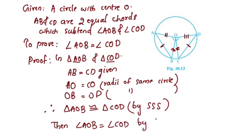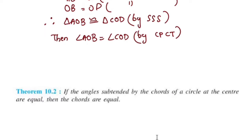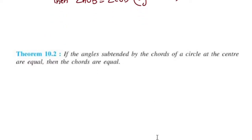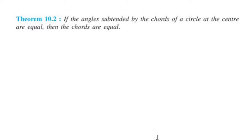Therefore, angle AOB is equal to angle COD by CPCT. Now for the converse: if the angles subtended by the chords of a circle at the center are equal, then the chords are equal.